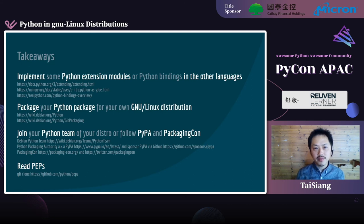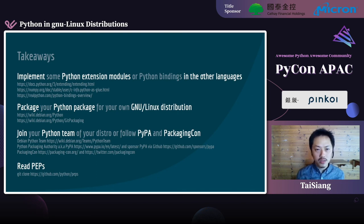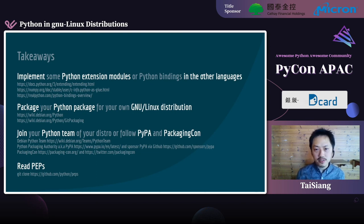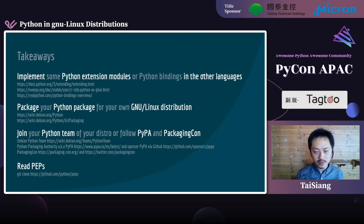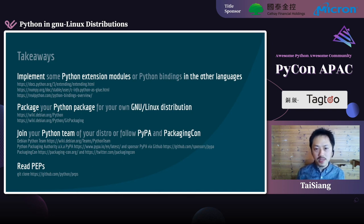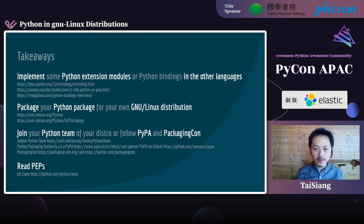Takeaways: try to implement some Python extension modules or Python bindings in another language — especially C if you are using CPython. This will help you if you encounter any errors related to C libraries during troubleshooting. Look for more applications or libraries in your day-to-day life and see if they are written in Python — if yes, explore how. Try to package them for your Linux distro. You may want to meet others interested in this topic — reach out via community channels or conferences. Read PEPs during your afternoon tea time if you want more details. PEPs represent a framework of thinking and design. Reading them carefully for topics you care about will greatly help you understand Python in your Linux distro much more than before. Thank you.